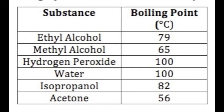Here is a chart of various liquids and their boiling points in degrees Celsius. You can see that some substances have the same boiling point; others do not. Boiling point is a good property to identify unknown substances because no matter how much of the substance there is, the boiling point will always be the same.